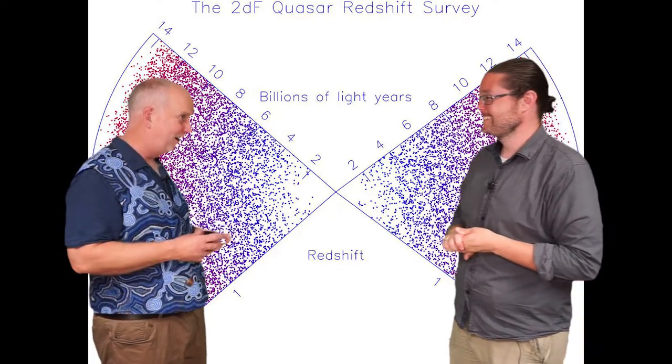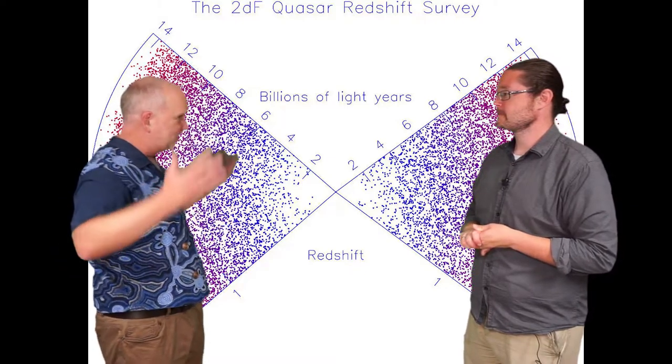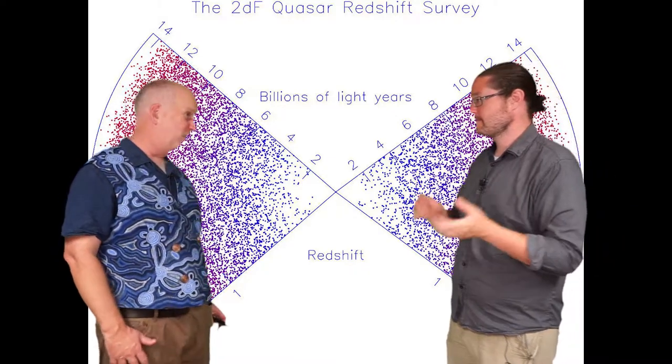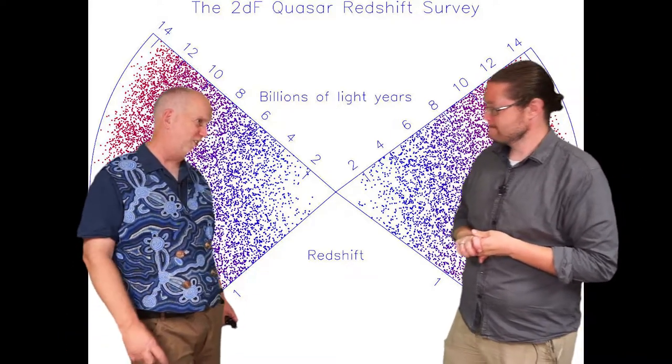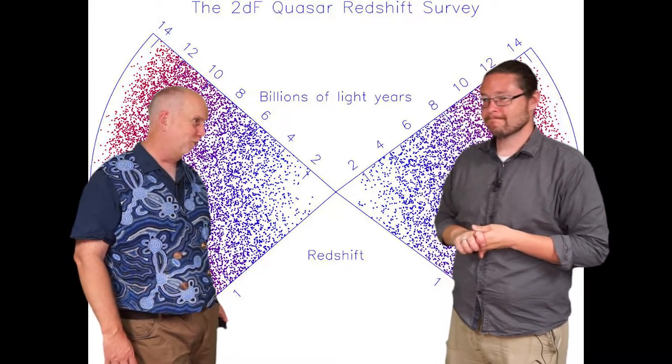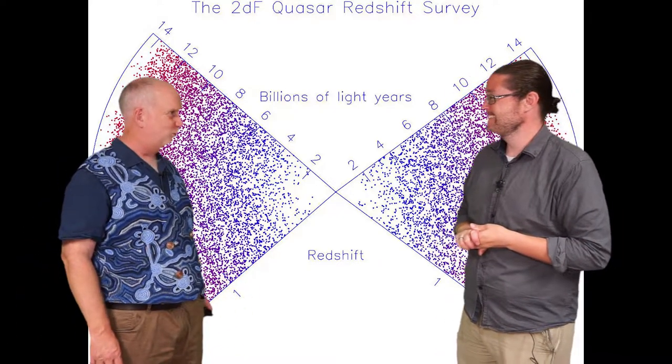So that means that overall the total number of stars within range of our telescopes is about 10 to the 22 or 10 to the 23, which is about the same as the number of grains of sand on Earth. There's a lot of stars out there. That's a lot of stars. And even more planets. That's right.